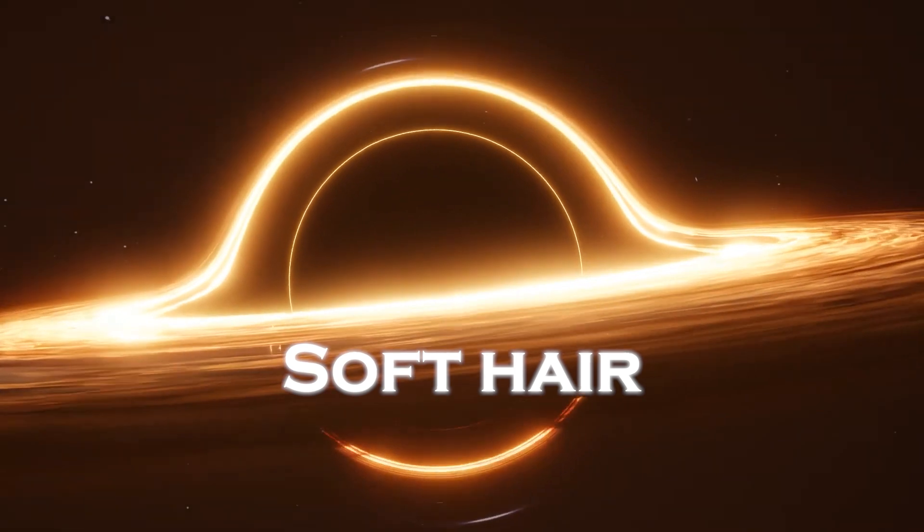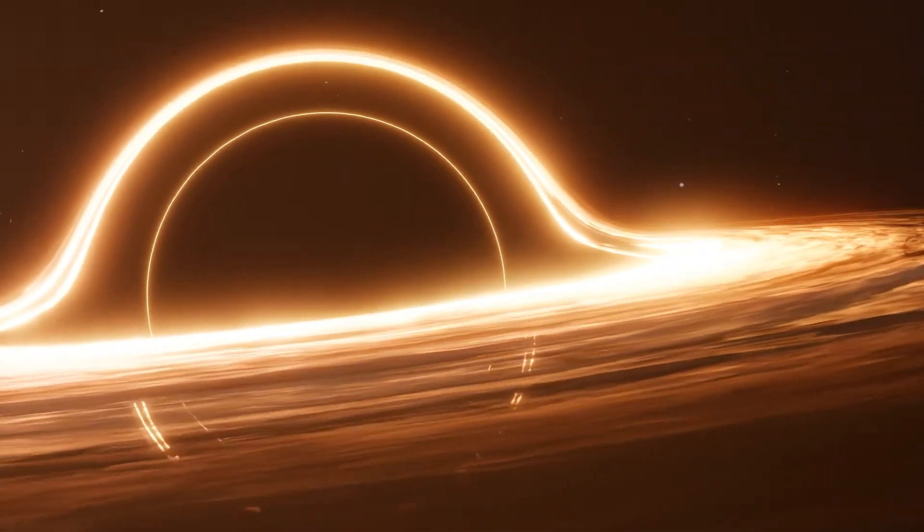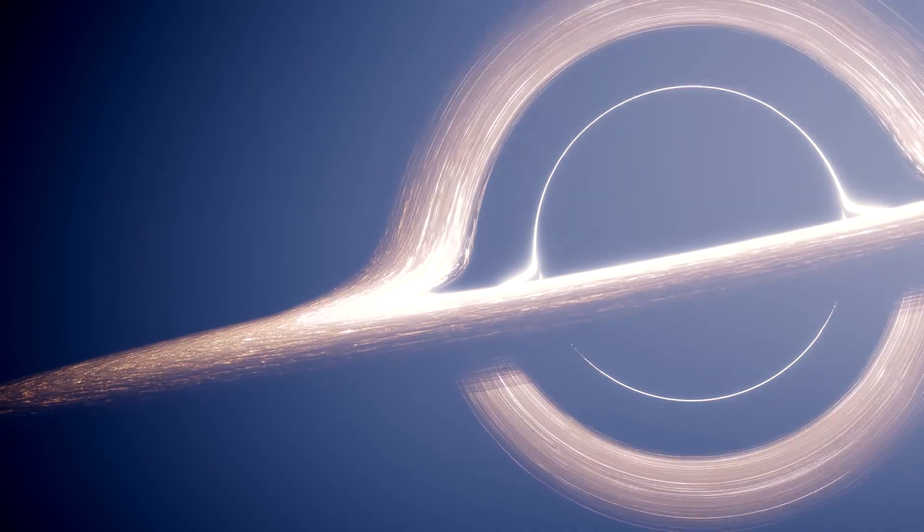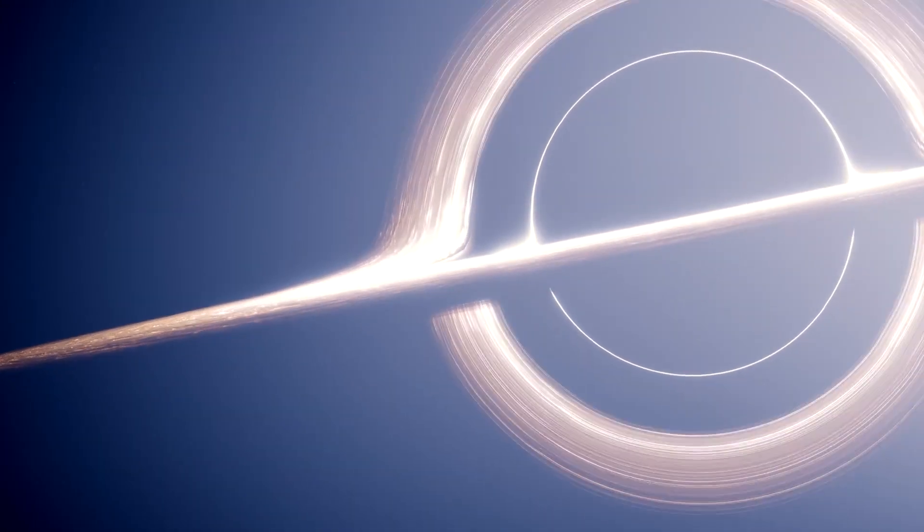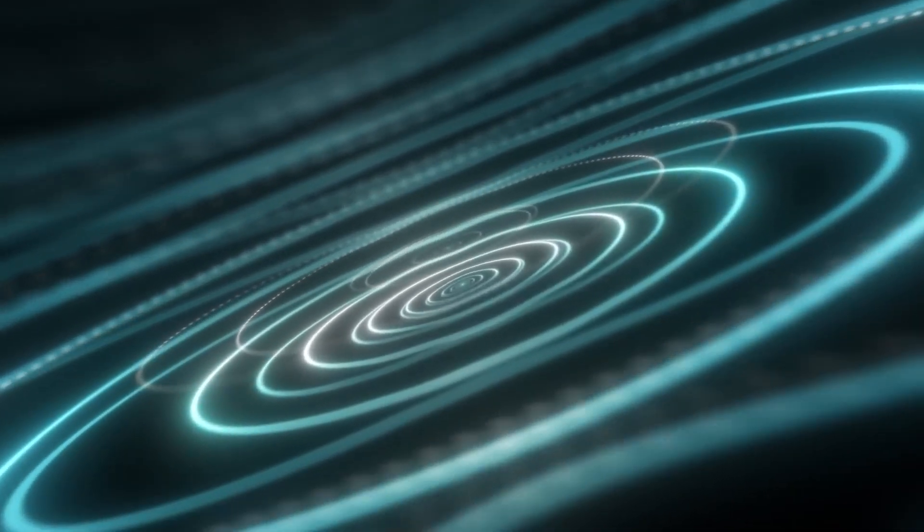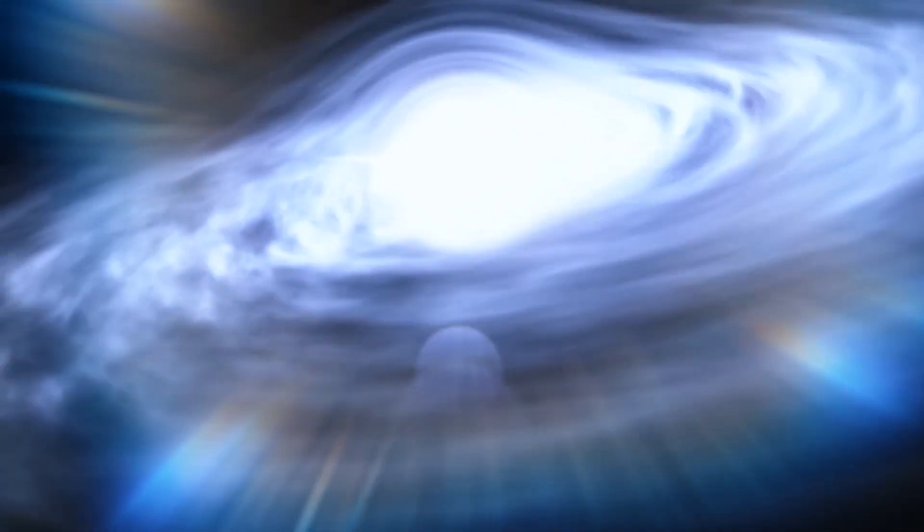The soft hair consists of a set of quantum properties believed to reside at the event horizon of black holes. Unlike the conventional hair associated with the black hole's mass, spin, or electric charge, soft hair is believed to have subtle quantum properties that encode information about the black hole's interactions with the surrounding environment.